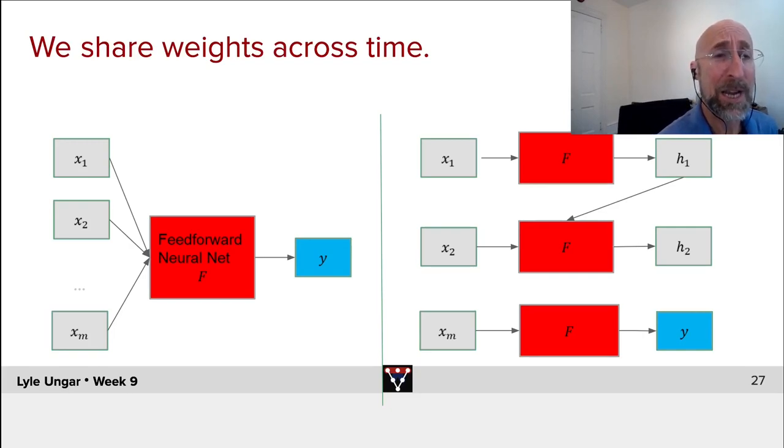Every time step takes in a hidden state from the preceding time, a new observation, and produces a new hidden state. And then at the very end, we take the final or penultimate hidden state, final observation, calculation, and produce a new hidden state which is then transformed, usually with a softmax, to make a prediction. So this is the basic recurrent neural net architecture, and we'll see in detail how to make this happen.